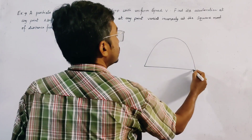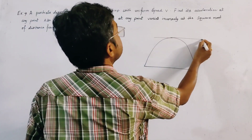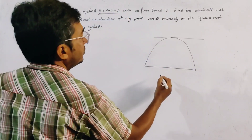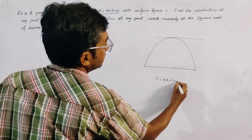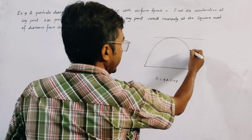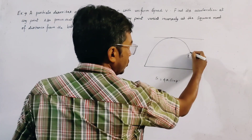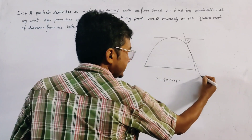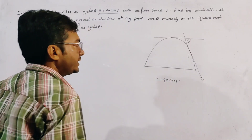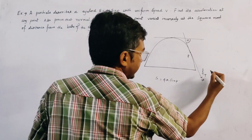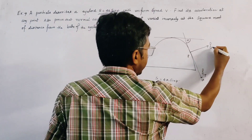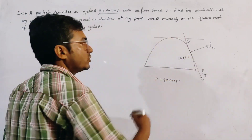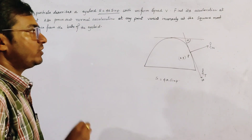We first draw a rough sketch of the cycloid — we draw only one arch. This is the cycloid, this is the vertex, and this is the base. The intrinsic equation is given by s = 4a sin ψ. At any point P we draw a tangent, and this angle is ψ. This is the positive direction of velocity v, and in this direction we consider the tangential acceleration.